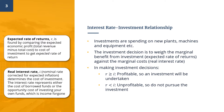The investment decision is to weigh the marginal benefit against the marginal cost of the investment. Marginal benefit is the expected rate of return from the investment that the business hopes to realize, whereas marginal cost is the interest rate that businesses must pay to borrow money. Businesses will invest in all investments for which the expected rate of return exceeds the interest rate. In other words, expected returns or profits and the interest rate are the main determinants of investment spending.